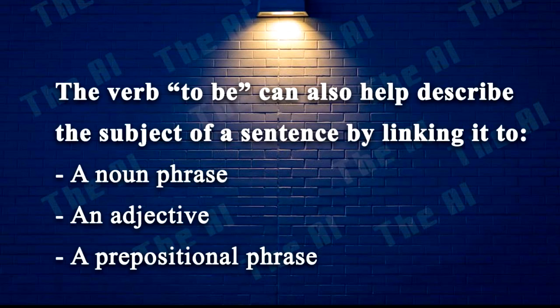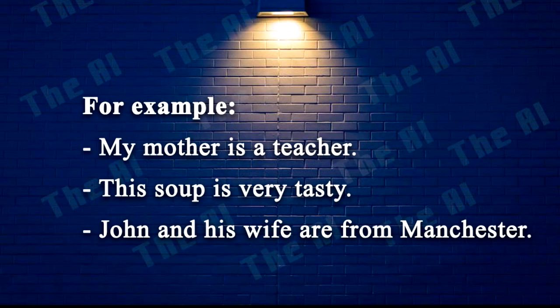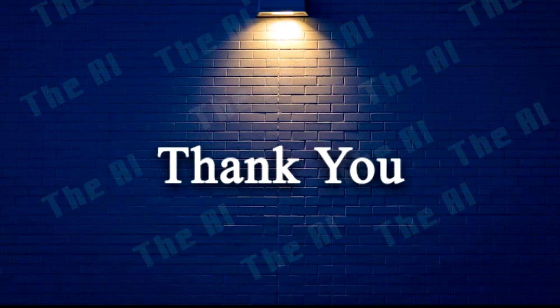The verb to be can also help describe the subject of a sentence by linking it to a noun phrase, an adjective, or a prepositional phrase. For example: My mother is a teacher. This soup is very tasty. John and his wife are from Manchester. I hope this helps you understand the verb to be better.